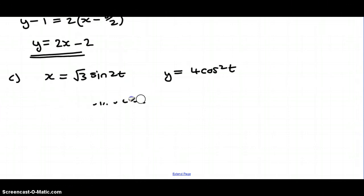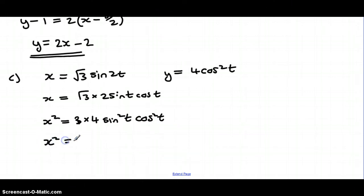Might just be worth recapping that one for you just so we're nice and clear. So if I rewrite this one as 2 sine t cos t using the trig identities that you will know from C3, and then I square it, I end up with... squaring 3, squaring 2, squaring sine and squaring cos. And x squared is going to be 12 sine squared t cos squared t.